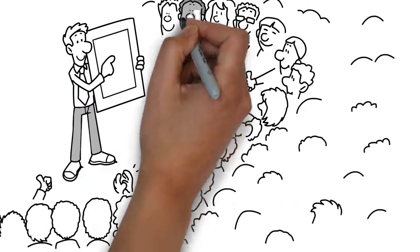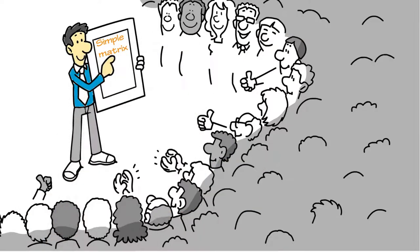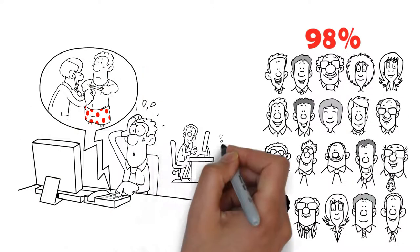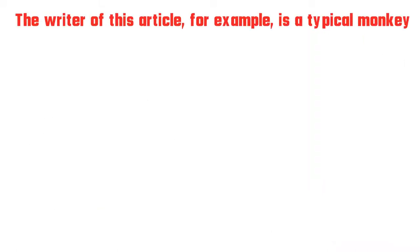The individual traits of each animal, department, can be broken down into a simple matrix. We can categorize 98% of people into one of the four cages, although this doesn't mean you can't have some of the other characteristics too. The writer of this article, for example, is a typical monkey.